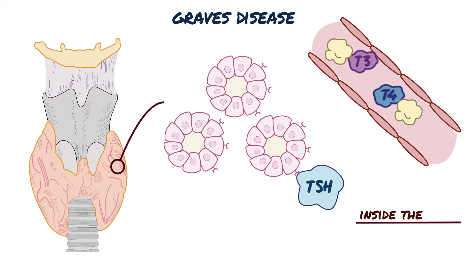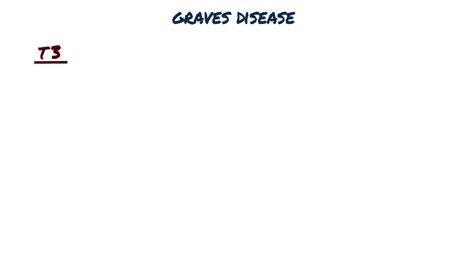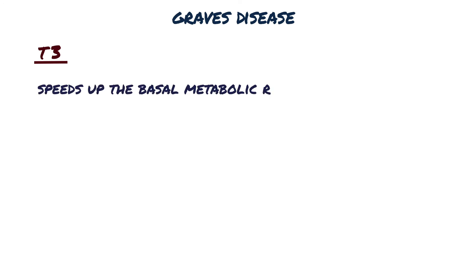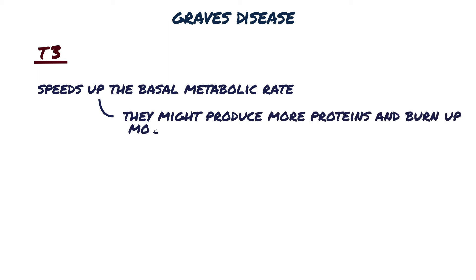These two hormones get picked up by nearly every cell in the body. Once inside the cell, T4 is mostly converted into T3, and it can exert its effect. T3 speeds up the basal metabolic rate — for example, cells might produce more proteins and burn up more energy in the form of sugars and fats.